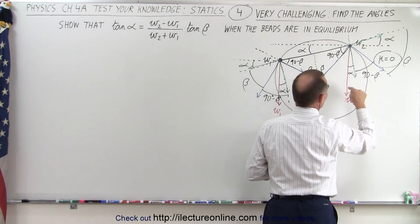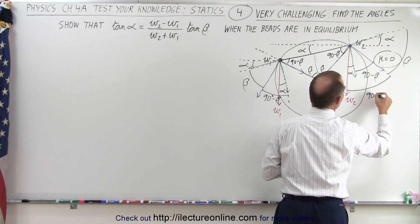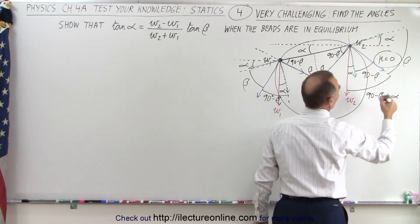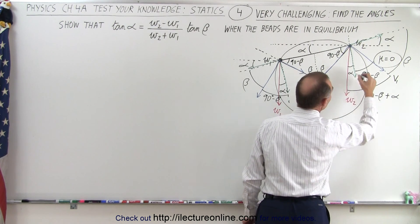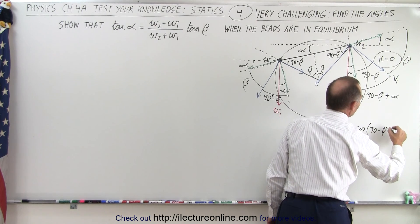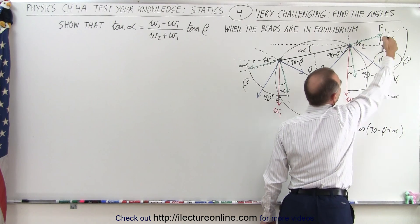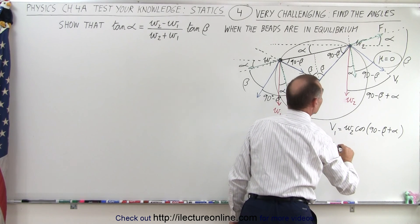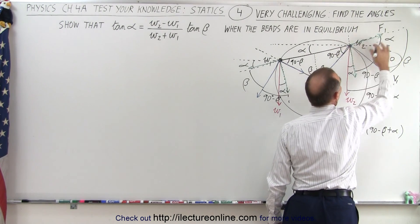The reason I did that is that ultimately I want to take this vector and subdivide it into a vector which is parallel to the line connecting the two beads and one perpendicular. Notice the angle in between is going to be 90 minus beta plus alpha. So this is 90 minus beta plus alpha. That means vector one is equal to W2 times the cosine of 90 minus beta plus alpha, because it's adjacent to that angle. Then, force one is equal to vector one times the cosine of beta. Multiplying through, I end up with F1.